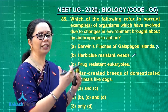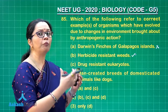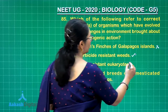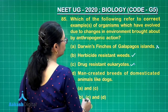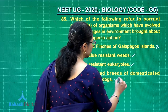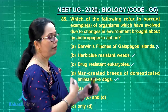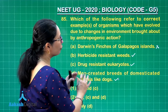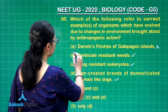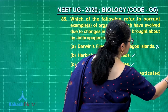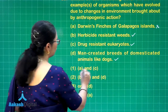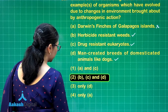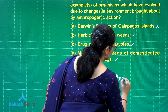We have been using so many chemicals, and some weeds that get killed while some of them have a mutation due to which they are able to resist those chemicals and they survive. Drug-resistant eukaryotes — the same thing. Man-created breeds of domesticated animals like dogs — humans have generated a number of breeds by mating experiments, creating conditions where one type of breed would be more successful than the other. So B, C, and D are all due to anthropogenic action, giving us the correct answer as option 2.